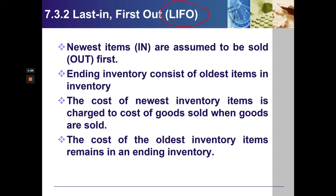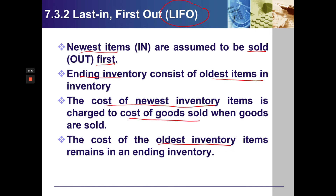LIFO. The newest items are assumed to be sold first. Ending inventory consists of the oldest items in inventory. The cost of the newest inventory items is charged to cost of goods sold when goods are sold. The cost of the oldest inventory items remains in ending inventory.